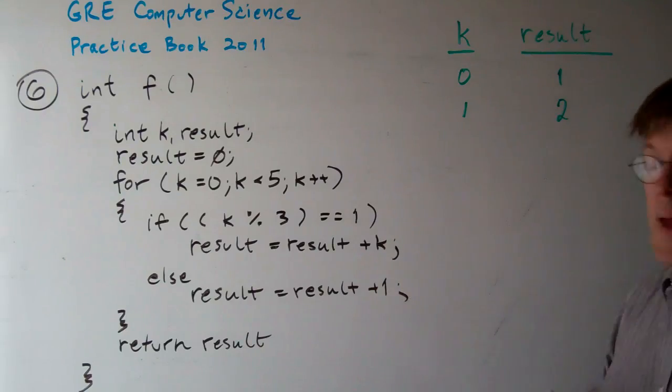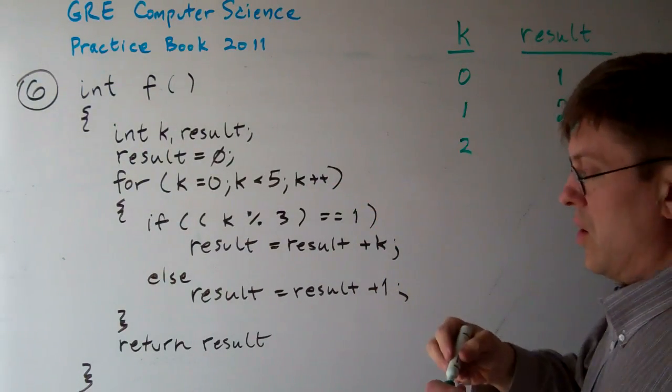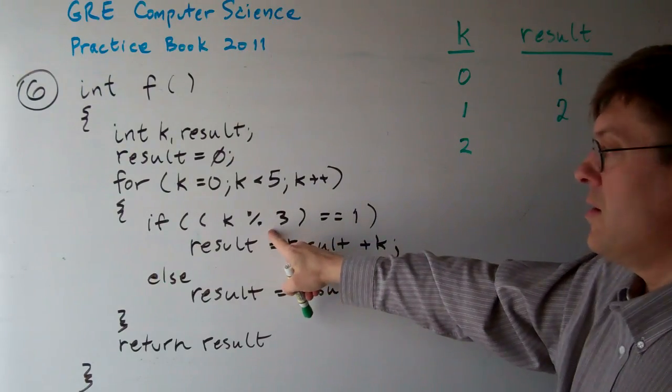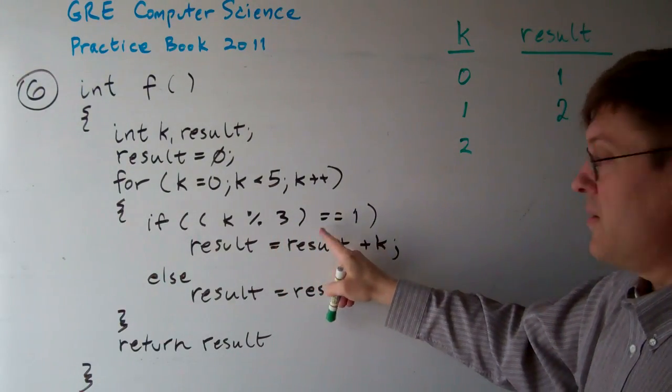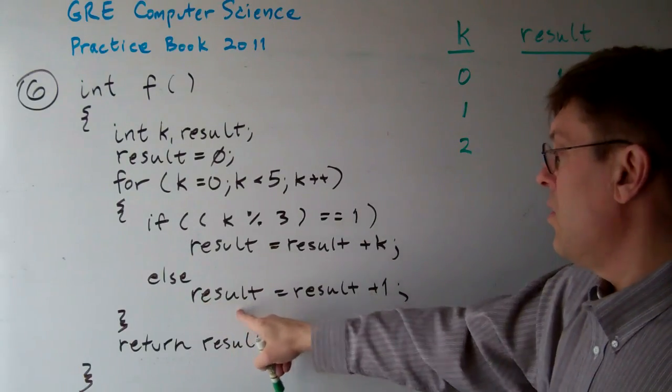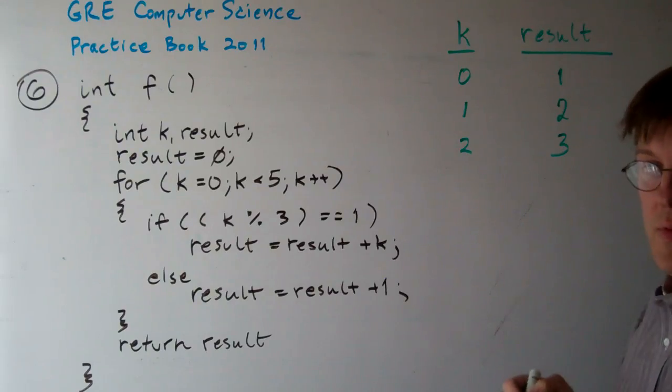Now we loop again. k now becomes 2. When k is 2, does k mod 3 equal 1? If k is 2, no, it doesn't. So we go here. Else, result gets result plus 1. So now we have result plus 1 is going to be 3.